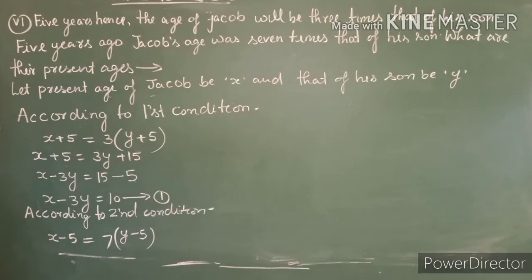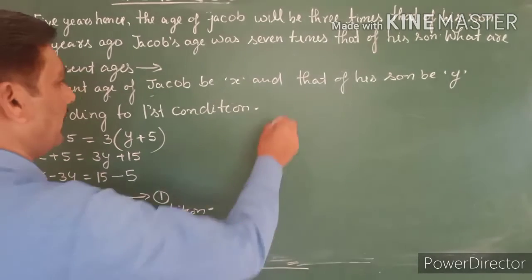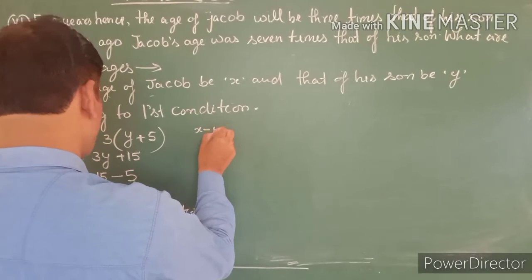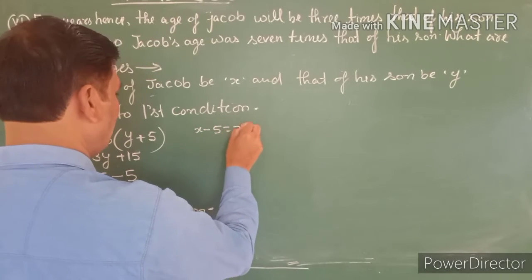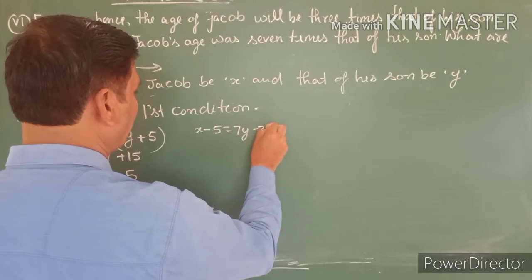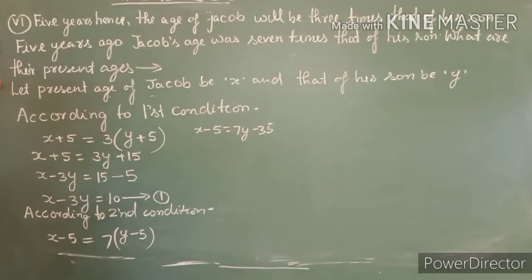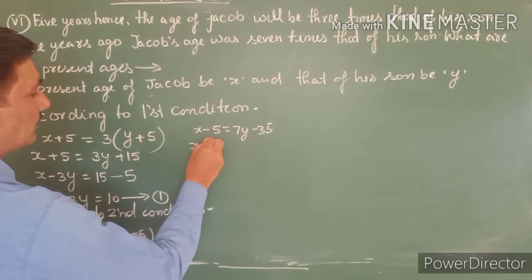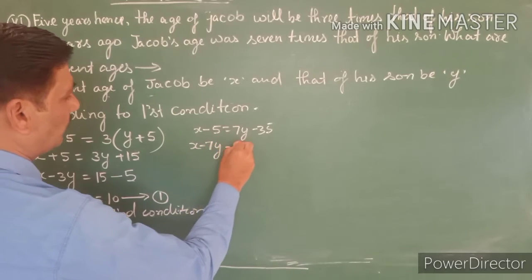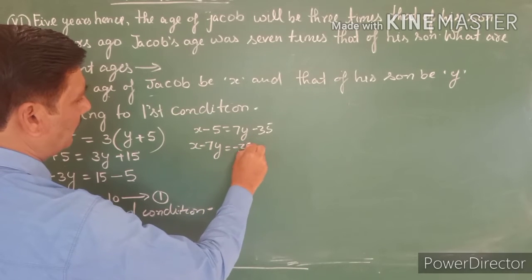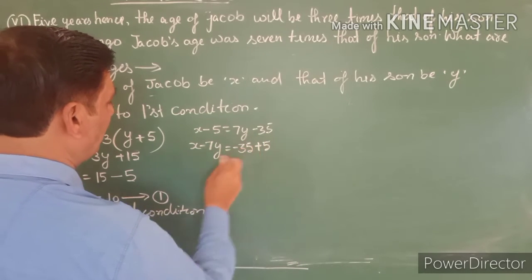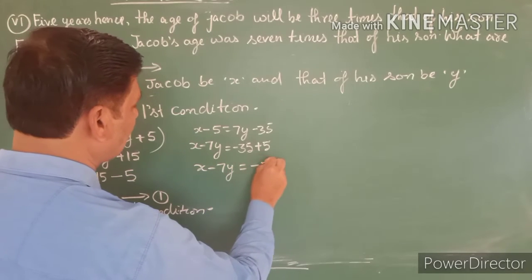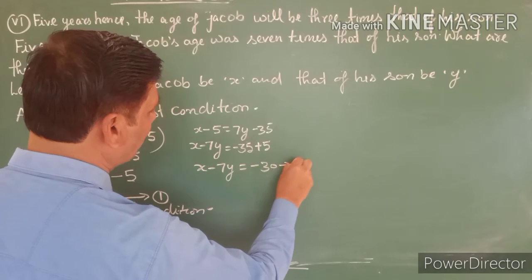Let's reform this too. x minus 5 equals 7y minus 35. Bringing 7y to the left: x minus 7y equals minus 35 plus 5, which gives x minus 7y equals minus 30. This is Equation number 2.